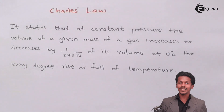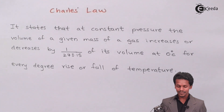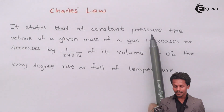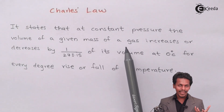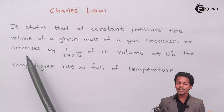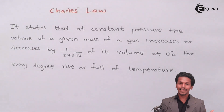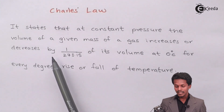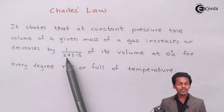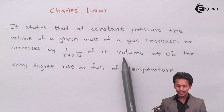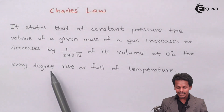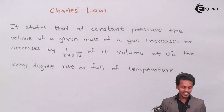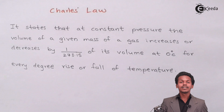So friends, as on your screen, this is a law based on Charles's Law, which states that at constant pressure, the volume of a given mass of a gas increases or decreases by 1/273.15 of its volume at 0°C for every degree rise or fall in the temperature.